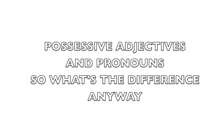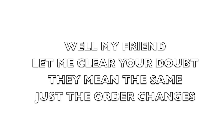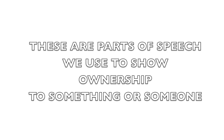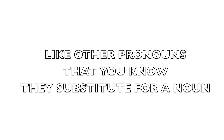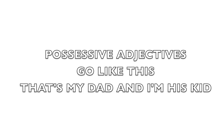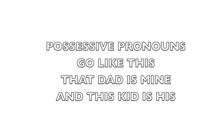Possessive adjectives and pronouns — so what's the difference anyway? Well, my friend, let me clear your doubt. They mean the same, just the order changes. These are parts of speech we use to show ownership of something or someone. Like other pronouns that you know, they substitute for a noun. Possessive adjectives go like this: 'That's my dad, and I'm his kid.' Possessive pronouns go like this: 'That dad is mine, and this kid is his.'